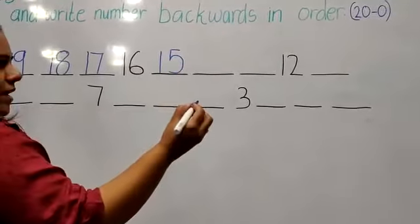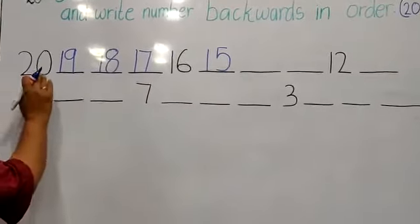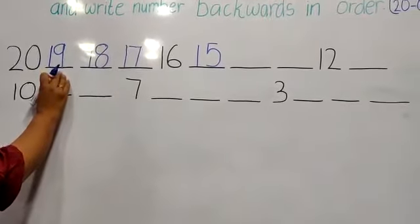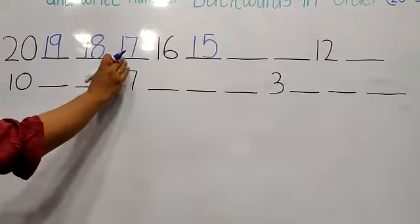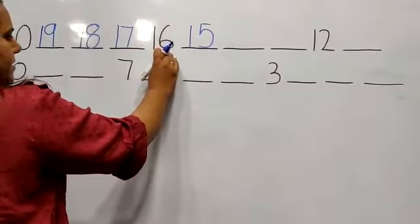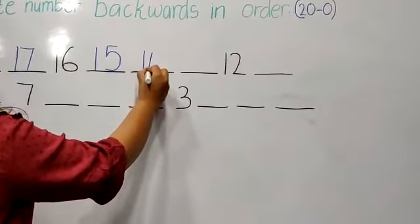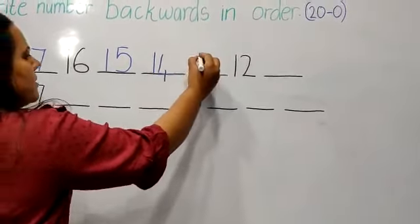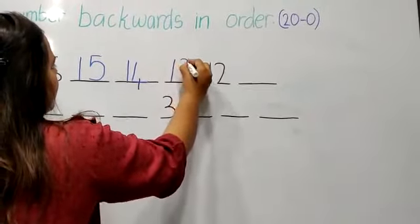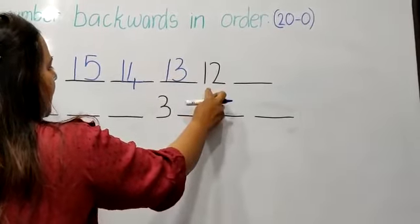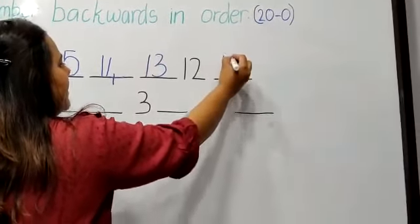In case you forget your number, you again start from 20, 19, 18, 17, 16, 15, 14, 13, 12, and 11.